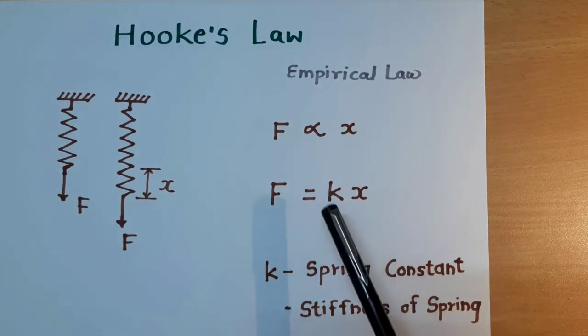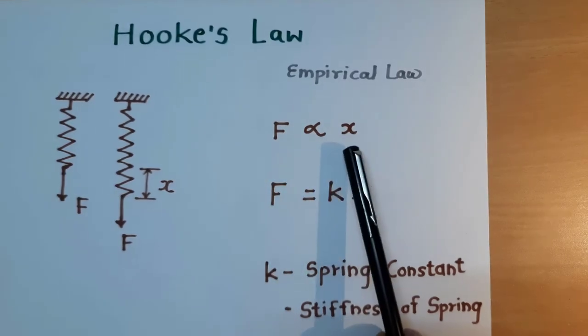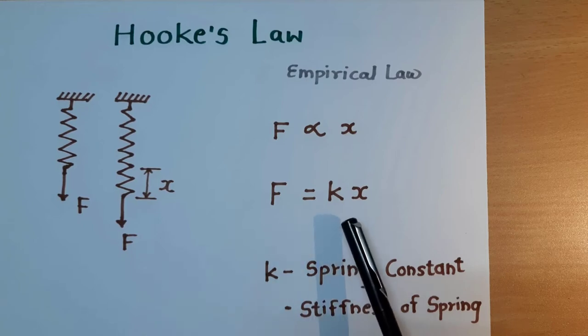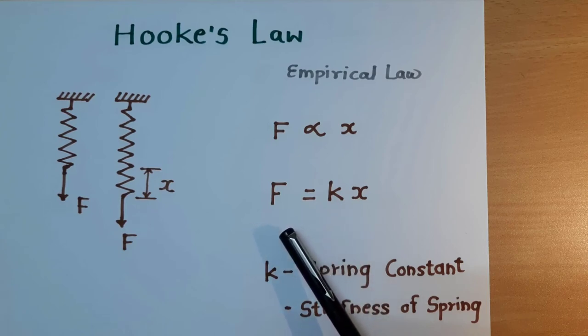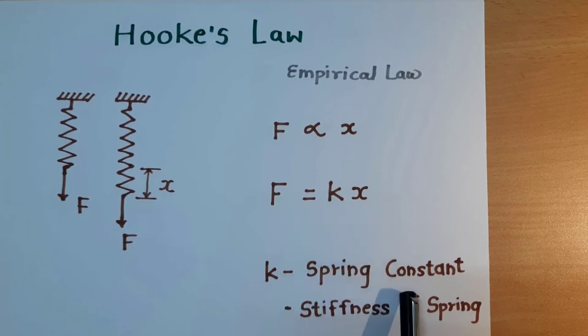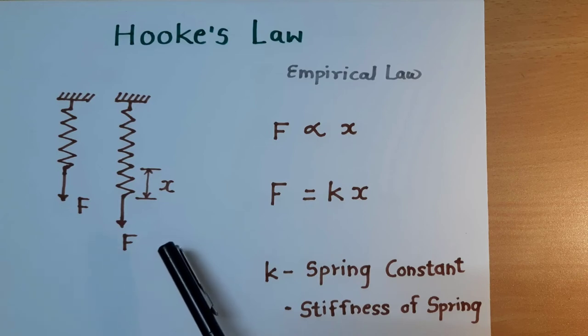In the mathematical formulation, we write it as force is directly proportional to the deformation. And if we convert that proportionality sign into equal to sign, then we have to add one constant in the equation. So that equation becomes force is equal to K into X where K is spring constant or we also call it as stiffness of a spring.